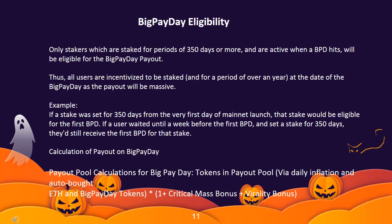Big Pay Day Eligibility: Only stakers which are staked for periods of 350 days or more, and are active when a BPD hits, will be eligible for the Big Pay Day payout. Thus, all users are incentivized to be staked for a period of over a year at the date of their Big Pay Day, as the payout will be massive. For example, if a stake was set for 350 days from the very first day of mainnet launch, that stake would be eligible for the first BPD. If a user waited until a week before the first BPD and set a stake for 350 days, they'd still receive the first BPD for that stake.